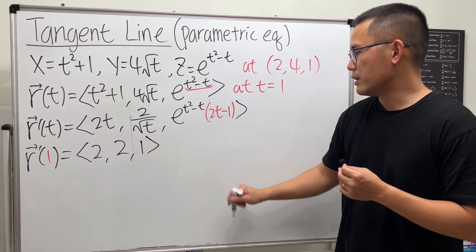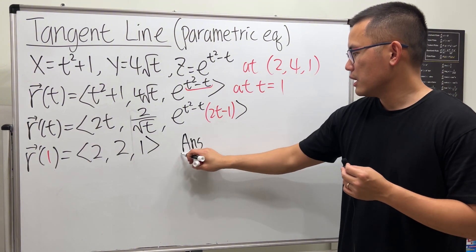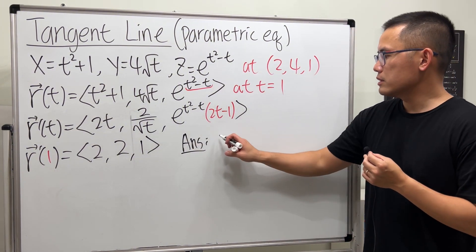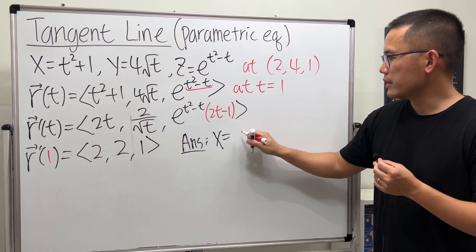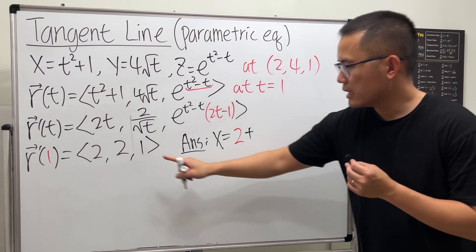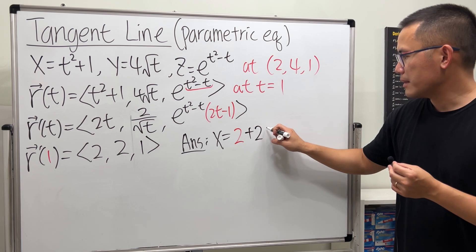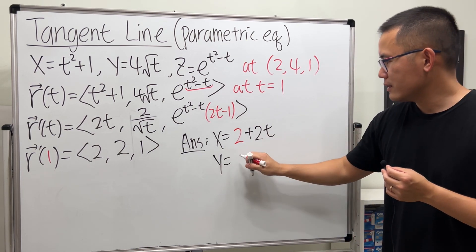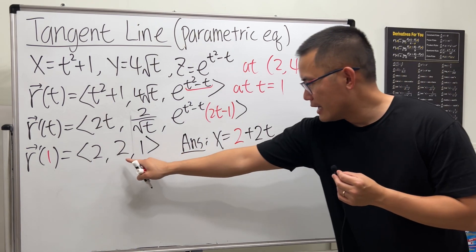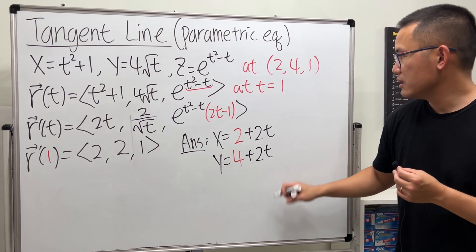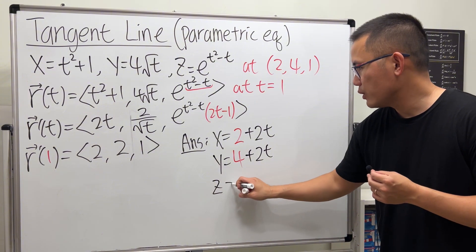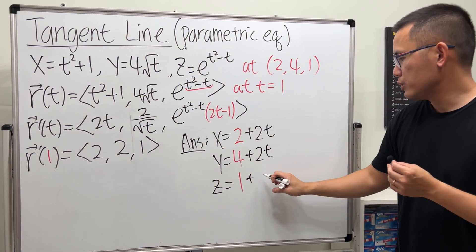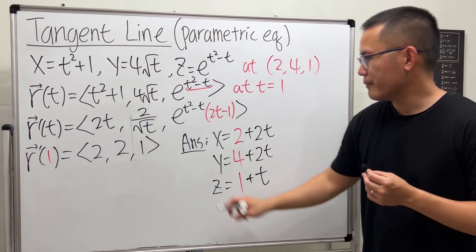Now we do what we did earlier. The tangent line in parametric form: X equals 2 plus 2T. Y equals 4 plus 2T. And Z equals 1 plus 1T, which is just 1 plus T. Just like that.